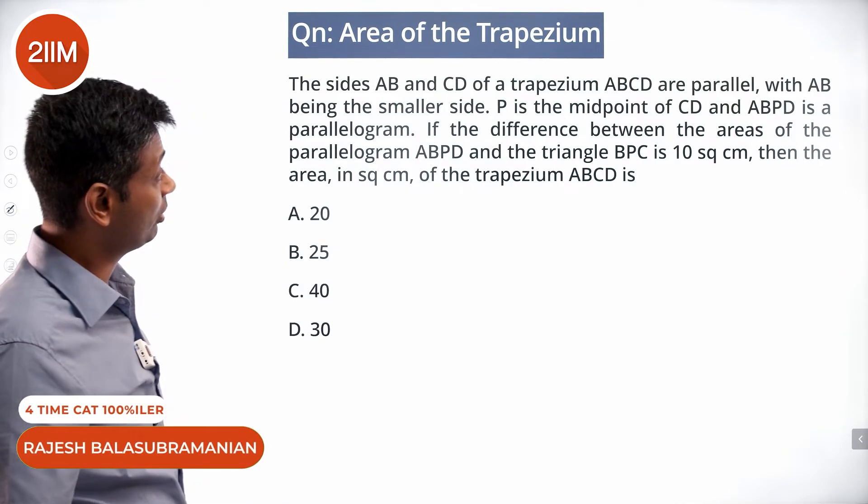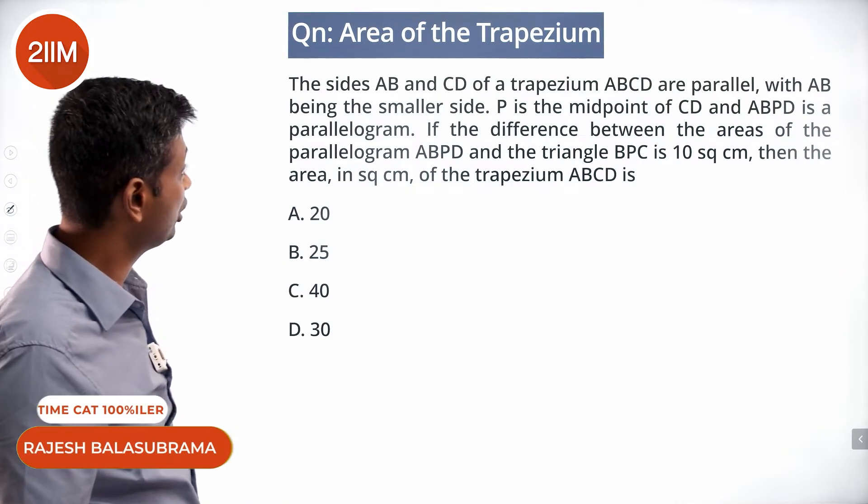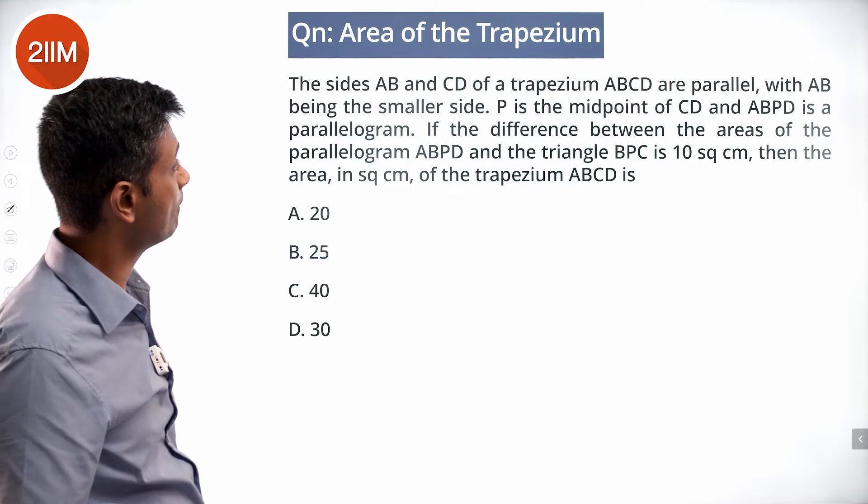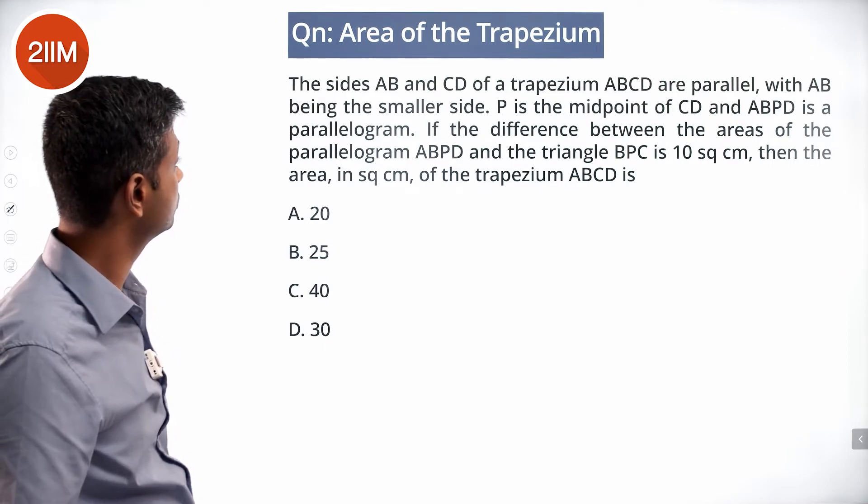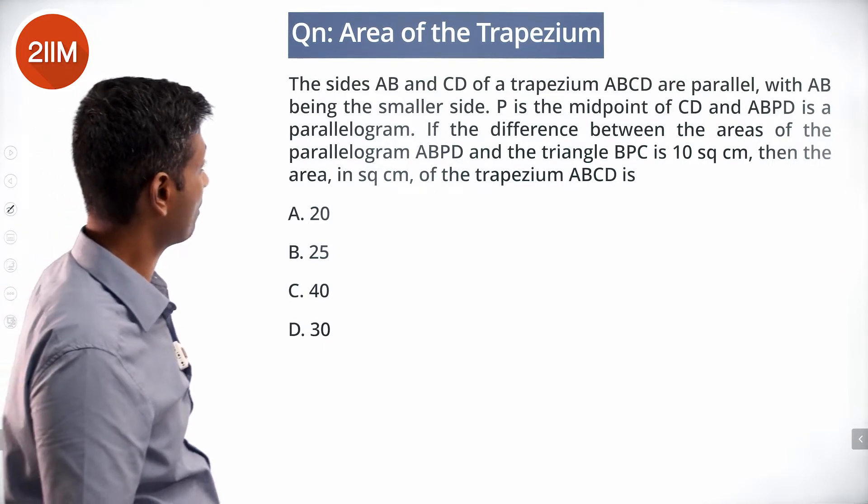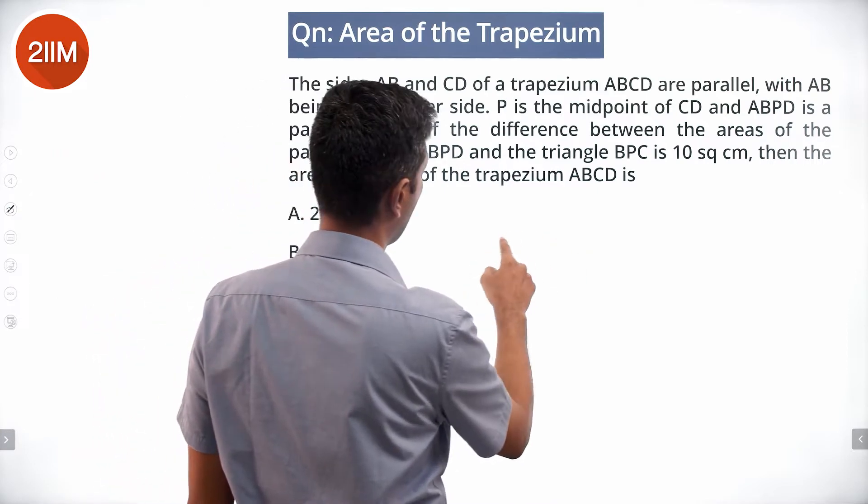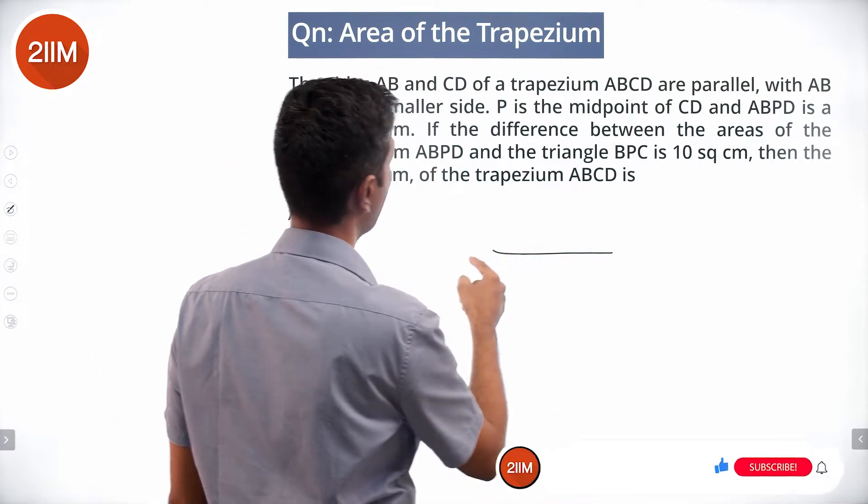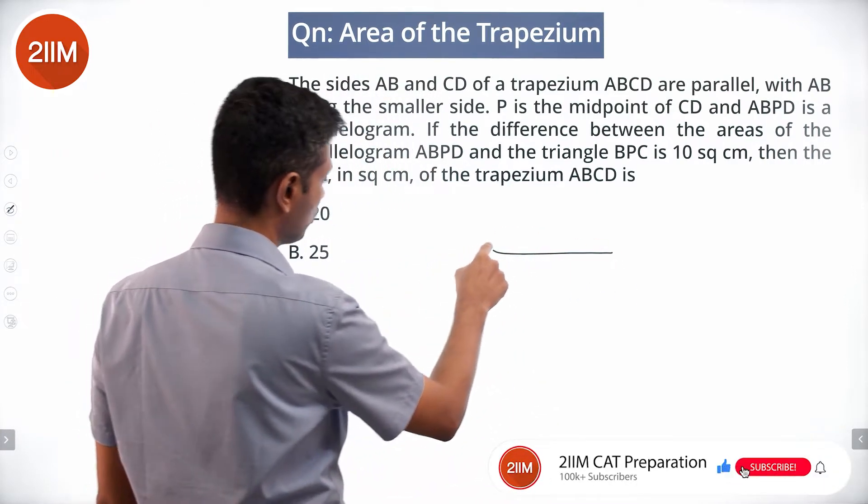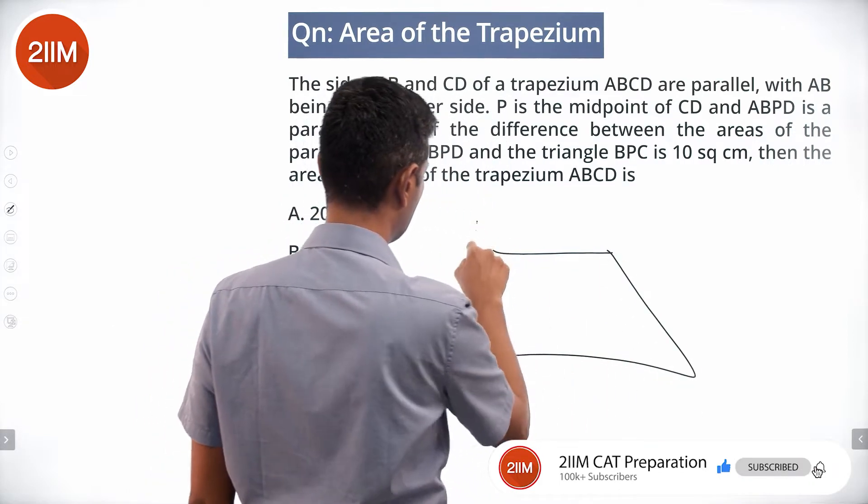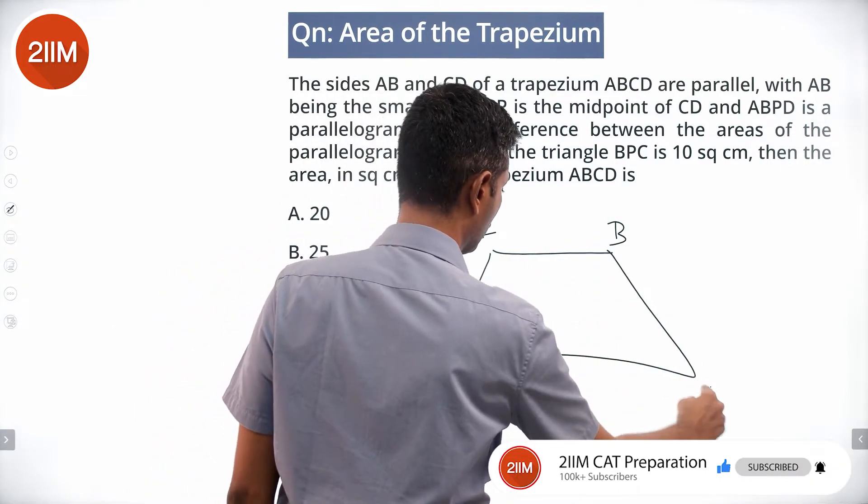The sides AB and CD of a trapezium ABCD are parallel, with AB being the smaller side. P is the midpoint of CD, and ABPD is a parallelogram.